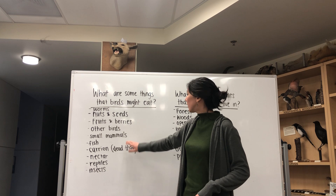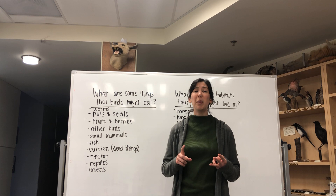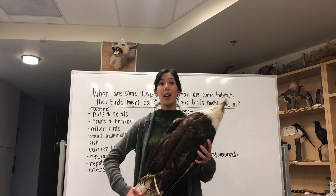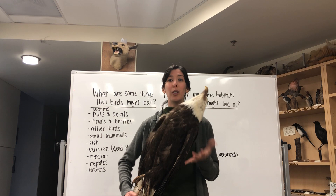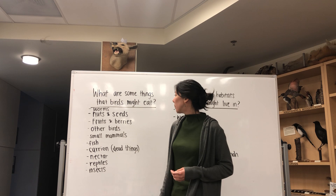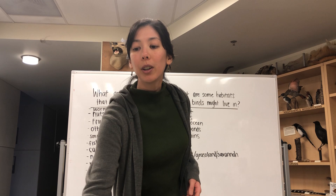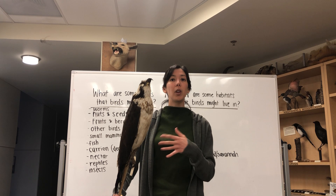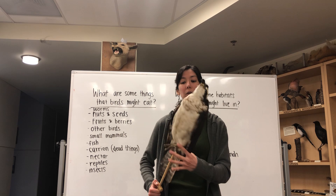Next on our list we have small mammals — that might include rabbits, squirrels, and sometimes small cats or dogs. Birds like eagles are mostly fish eaters but will sometimes go after small pets; you can see the size of this eagle in comparison to my body. Next is fish: bald eagles eat fish, and another common fish-eating bird is the sea hawk or osprey. A lot of meat-eating birds have a big hooked beak to help them eat animal matter.